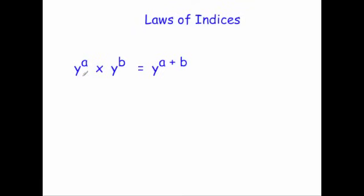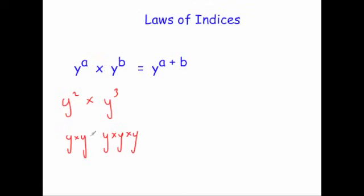The first law of indices: y to the power of a times y to the power of b is equal to y to the power of a plus b. You add the powers together, and this only works if you've got the same base. Let's see why that works. If we had y squared multiplied by y cubed, y squared is y times y, and y cubed is y times y times y. Multiplying them all together gives y to the power of 5, because there are 5 of them. Notice that 2 plus 3 equals 5.